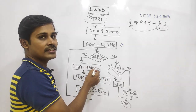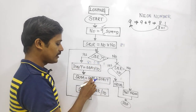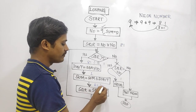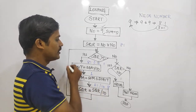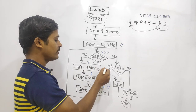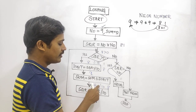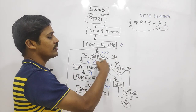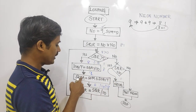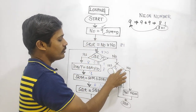When we enter the loop, we take square modulus 10 to extract the last digit. For 81 modulus 10, the result is 1. We add that digit to the sum. The sum value builds up as we process each digit.